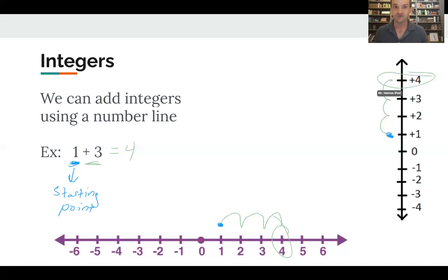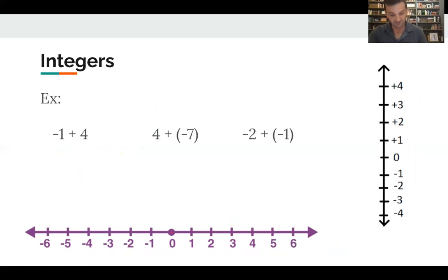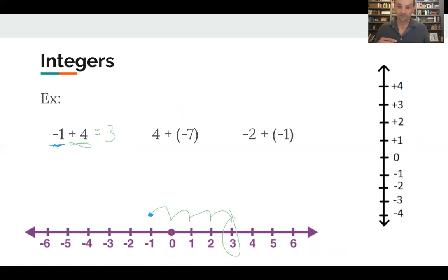That was a kindergarten example, but we can also do it with positive and negative integers, which is the middle school stuff. For example, negative one plus four: I place my starting point at negative one, then add four, going up the number line four spaces — one, two, three, four — and the answer is three. If you're one dollar in debt and you find four bucks, you pay off the dollar and keep three, so you're up three.